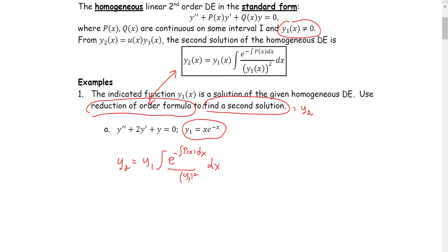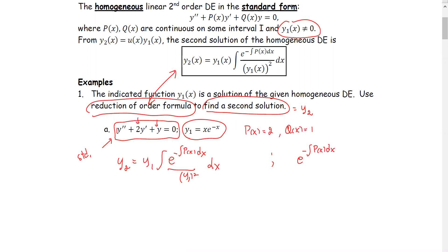Before using the reduction of order formula, make sure your equation is in standard form. This equation is already in standard form because the leading coefficient is 1. On the side, we find e^(−∫p dx). Here p(x), the coefficient of the first-order term, is 2, and q(x) = 1. Therefore, e^(−∫p dx) = e^(−∫2 dx) = e^(−2x).